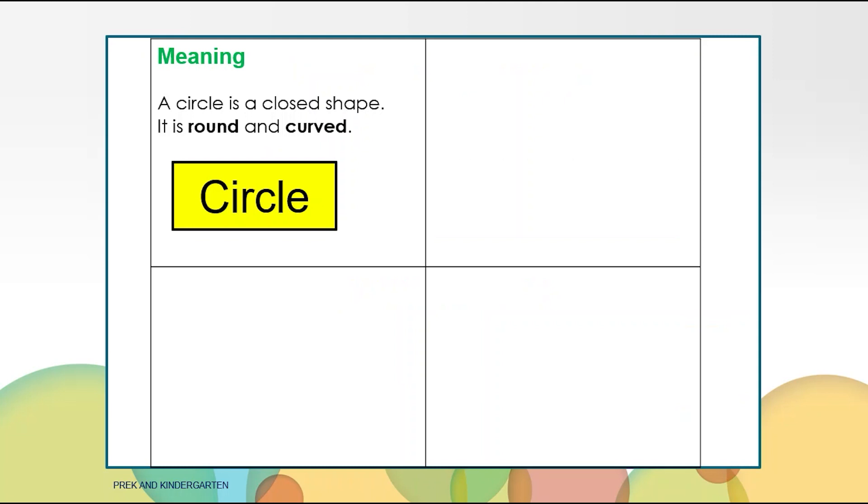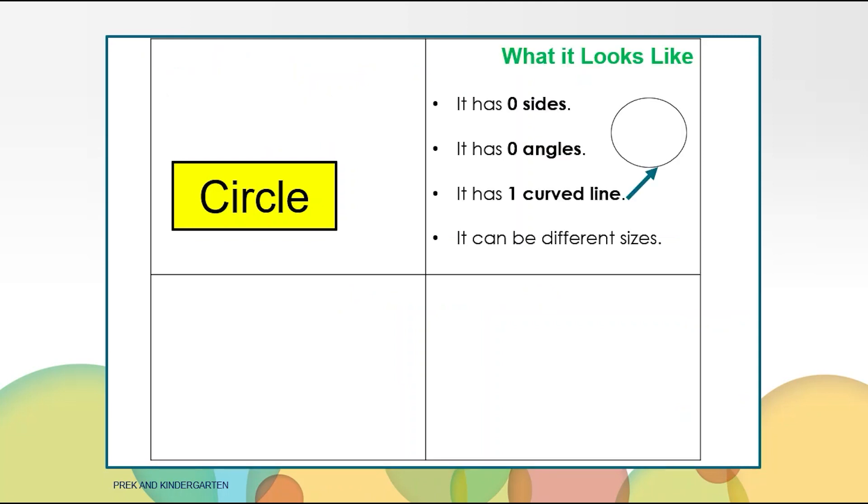The first shape is a circle. It is round and curved. It's also a closed shape which means there are no holes around the edge. It has no sides and no angles or corners. It has one curved line. I know we always think of a line being straight but this is a curved line. See where the arrow is pointing? That's the curved line. See how the line has no spaces? That means it's a closed shape.